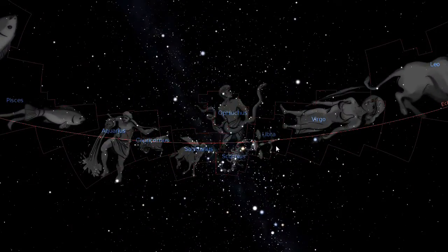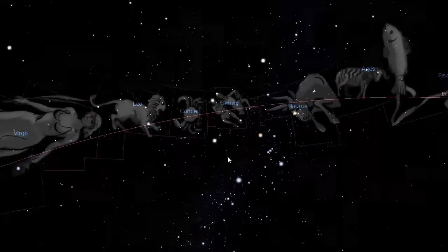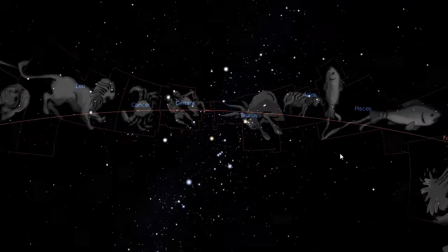Actually, the ecliptic passes through a 13th constellation, Ophiuchus, but ancient astrologers considered the number 13 unlucky.